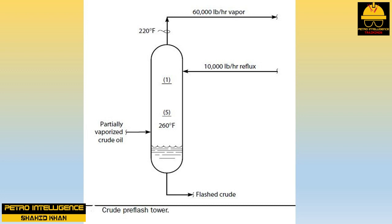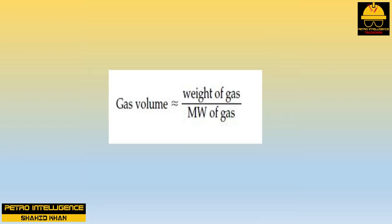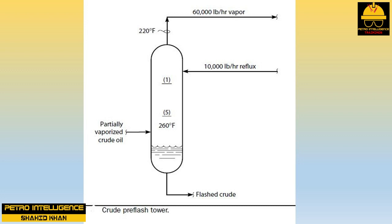A reduction in tower top temperature of 20°F would increase the weight flow of vapor by roughly 10%, but the composition of the vapor would also change — the molecular weight of the vapor would drop by approximately 8%. The lower the molecular weight (MW) of a gas, the greater the volume that a given weight of the gas occupies; gas volume ≈ weight of gas ÷ molecular weight of gas. If the weight of gas goes up by 10% and the molecular weight goes down by 8%, the volume of gas goes up by 18%. The temperature reduction of 20°F shrinks the gas by about 3%, so the net effect of raising the reflux rate is to increase the gas volume through the top tray by 15% (18% − 3%). This results in a substantial increase in top tray pressure drop, which can — and often does — cause the top tray to flood, even though the external heat input and feed rate to the tower have never changed.